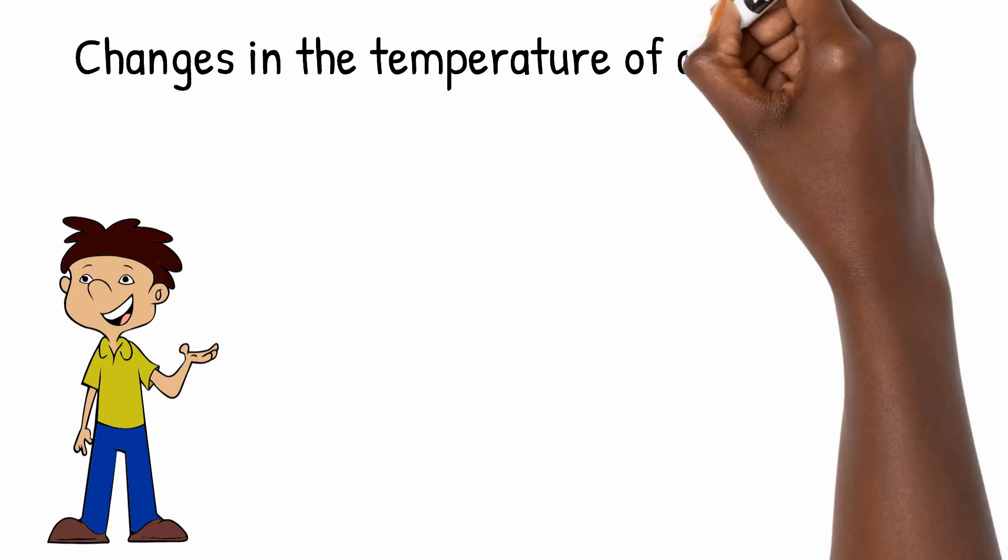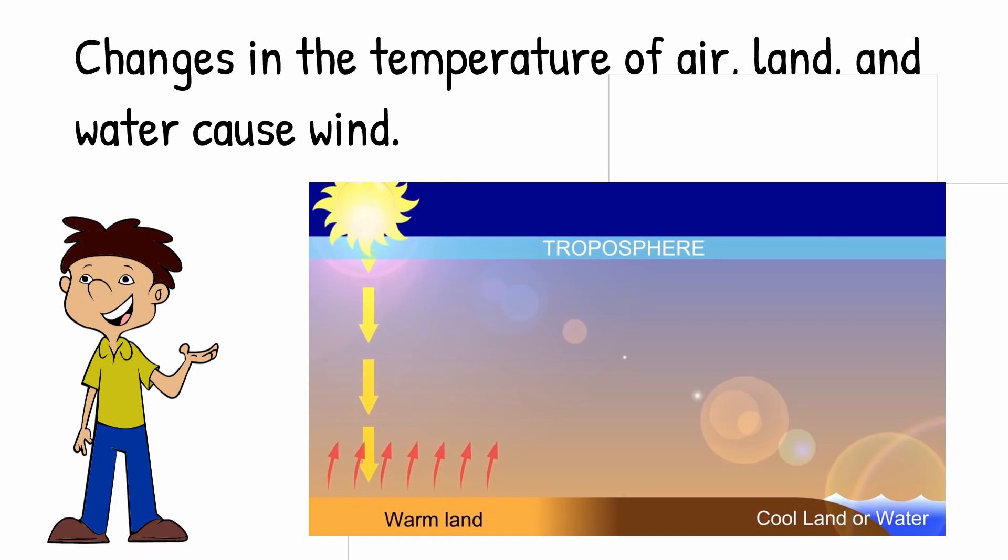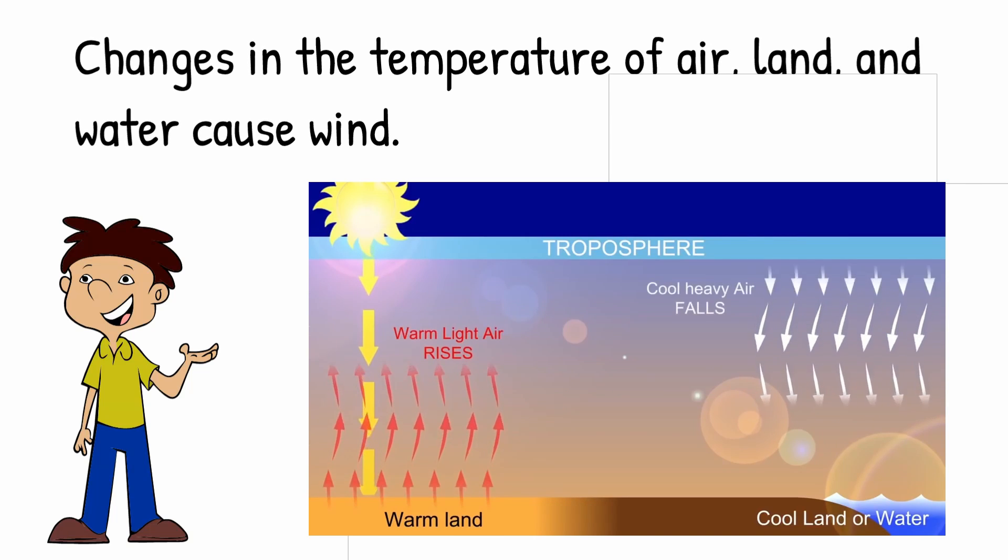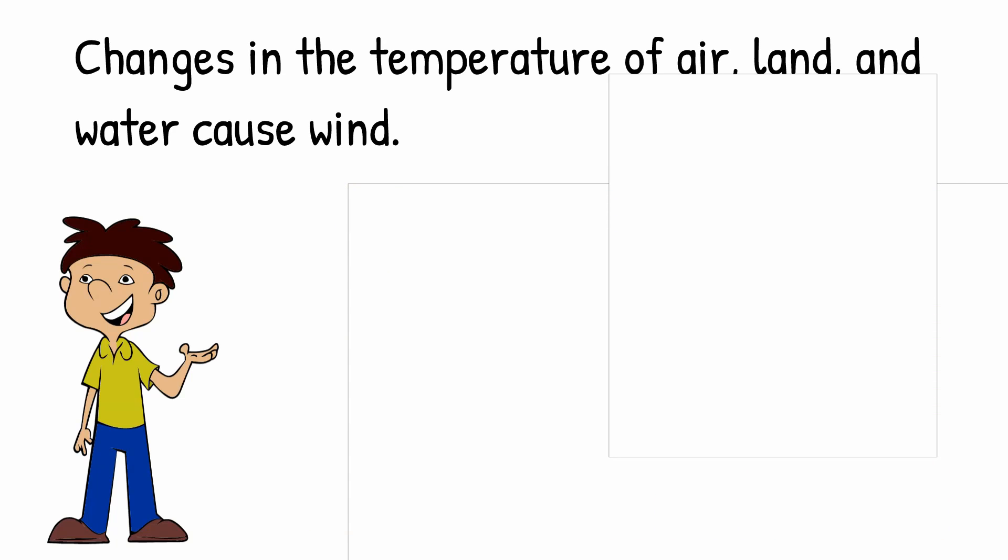Changes in the temperature of air, land and water cause wind. The sun's rays heat up the Earth's surface at different rates. In this case, the land is warmer than the water. When air is heated up, it rises. This leaves room for the cooler air above the water to flow in. The flowing air is the wind.